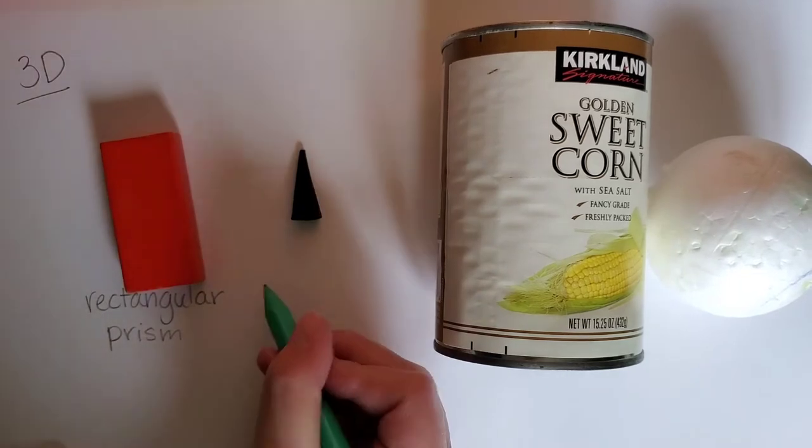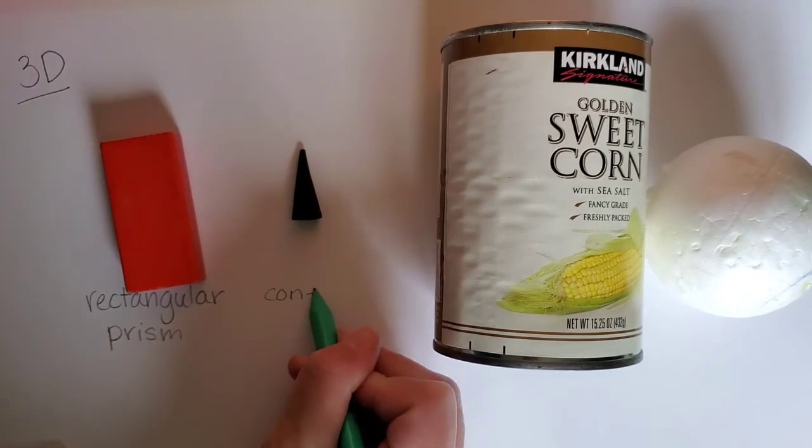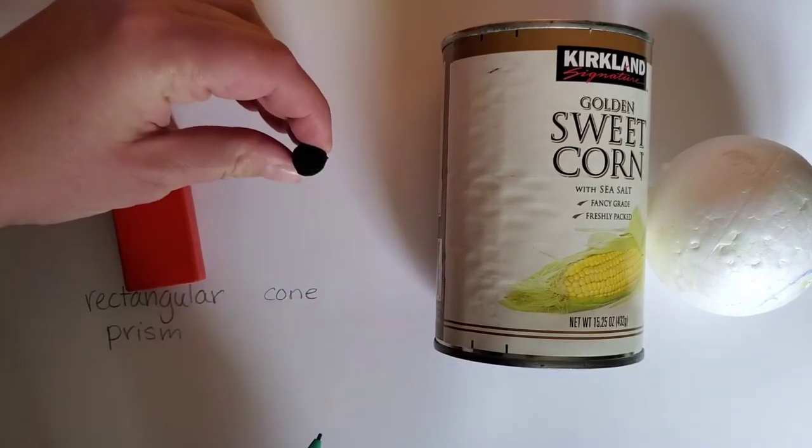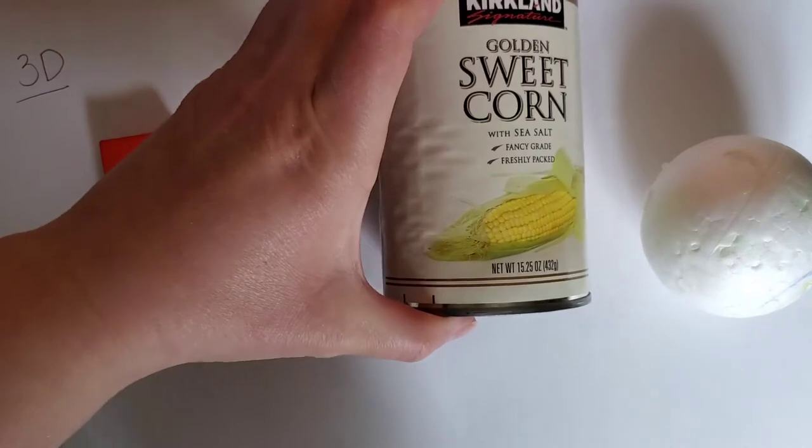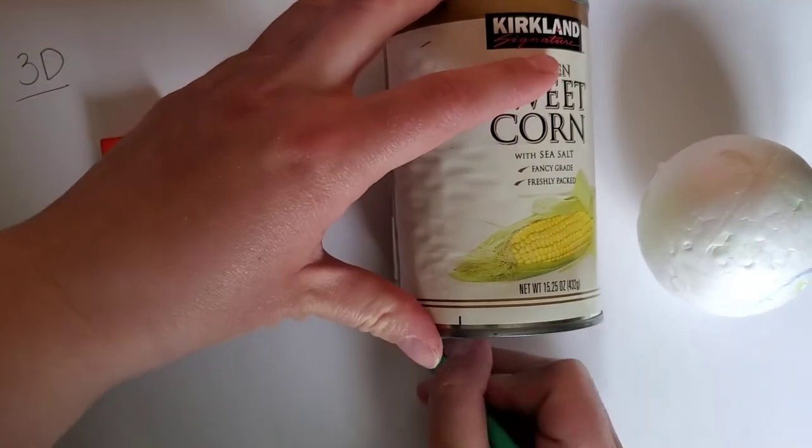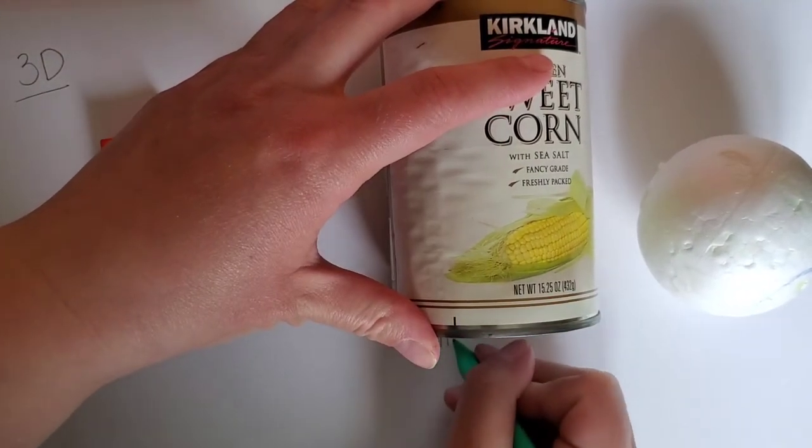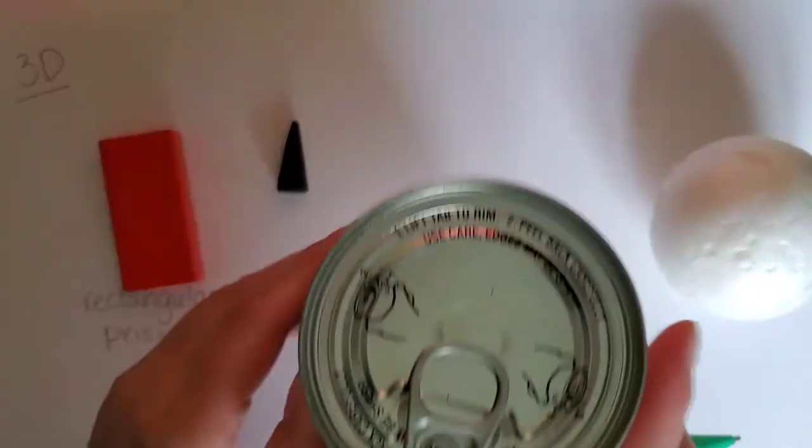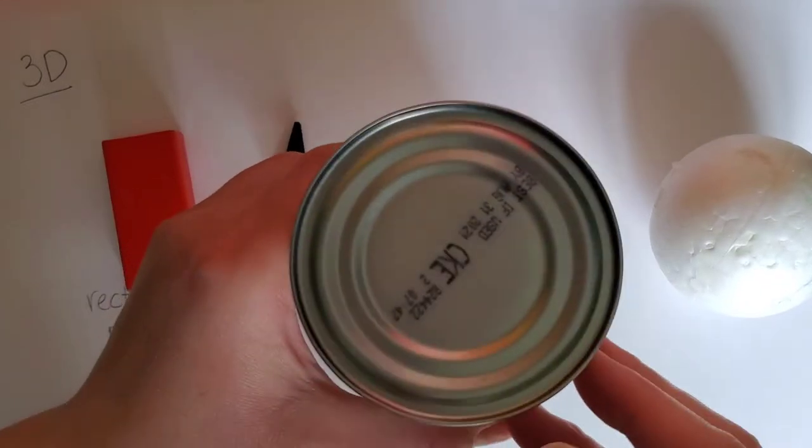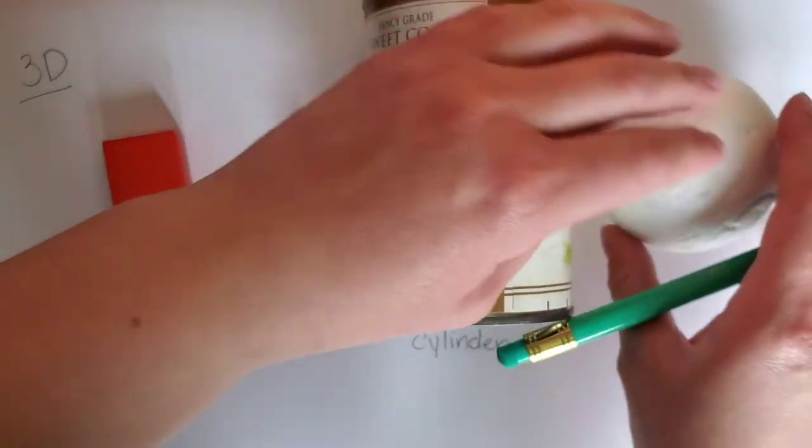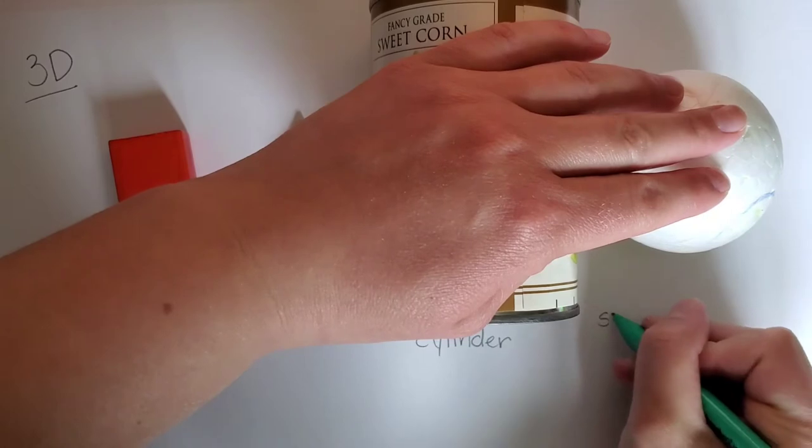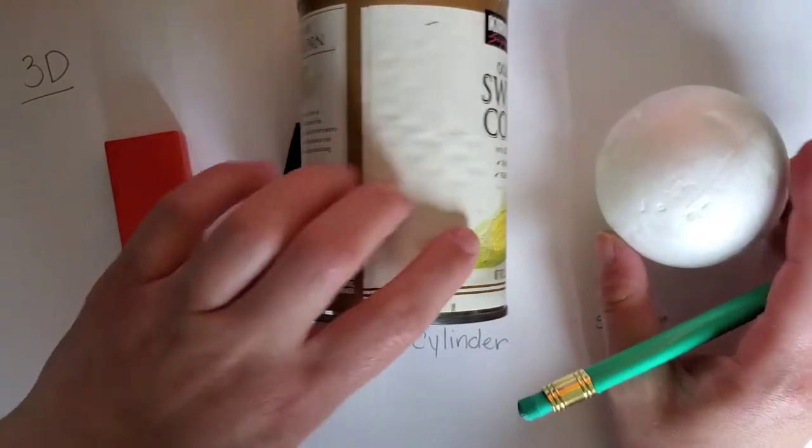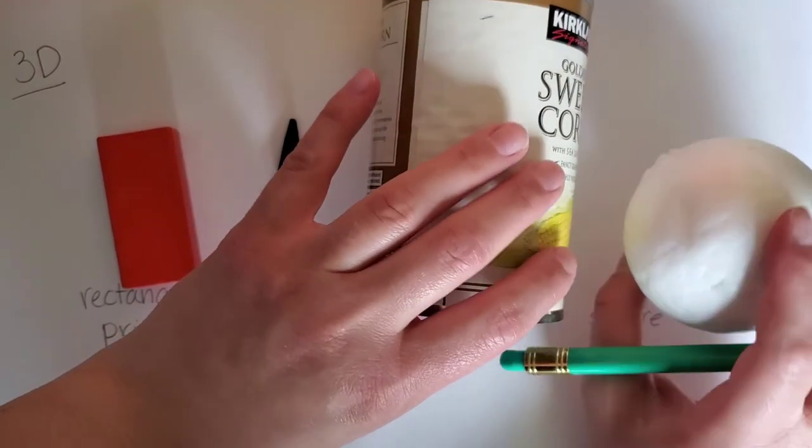Here we have a cone. It looks just like the cone you would eat ice cream out of. It's a triangle shape from the side and a circle on the bottom. This shape right here, this can of sweet corn, is a cylinder. Cylinders are tall and straight on the sides, circles on the top and the bottom. The last shape we have here is what's called a sphere. And spheres are three-dimensional circles. They're round all the way around.